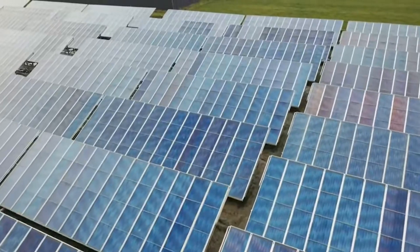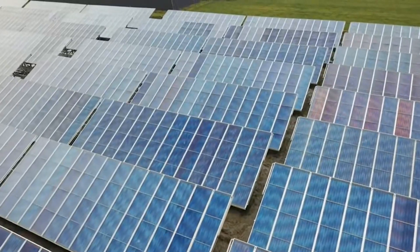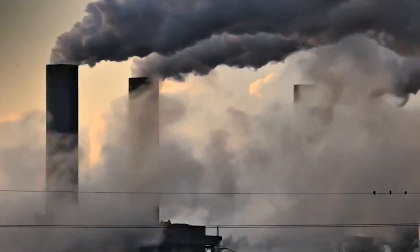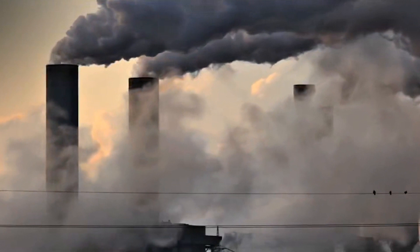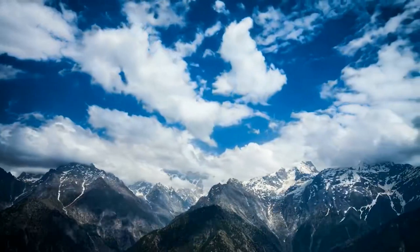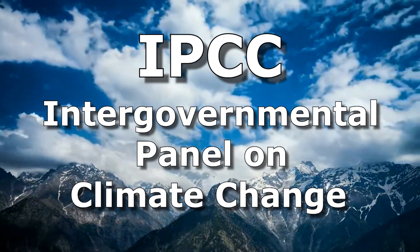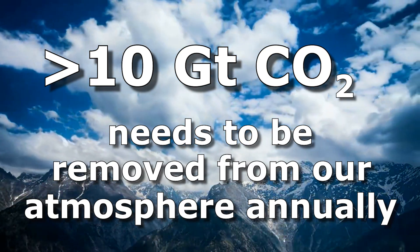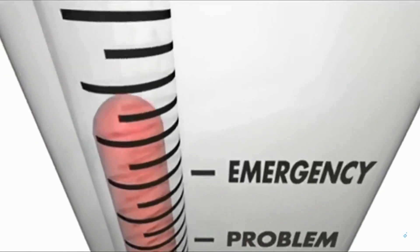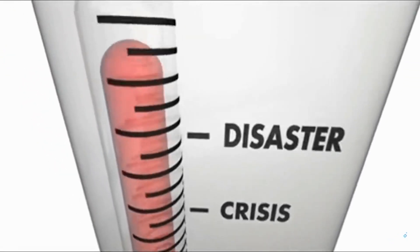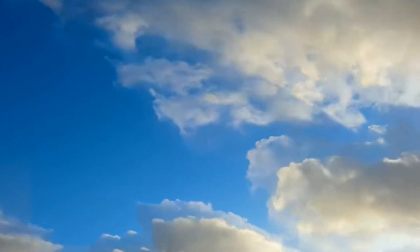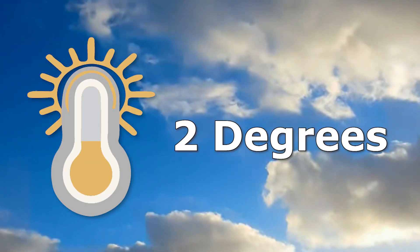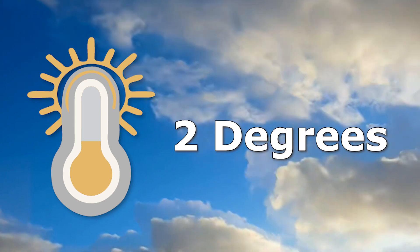Even if we transition to renewable energy sources by mid-century, our atmosphere will still bear an overload of CO2 from more than 200 years of industry-scale fossil fuel burning. According to the Intergovernmental Panel on Climate Change, it's estimated that we need to remove over 10 gigatons of carbon dioxide from our atmosphere annually in order to curb catastrophic rises in temperature by mid-century. If we're able to accomplish that, global temperature is only predicted to rise by 2 degrees centigrade by 2050.